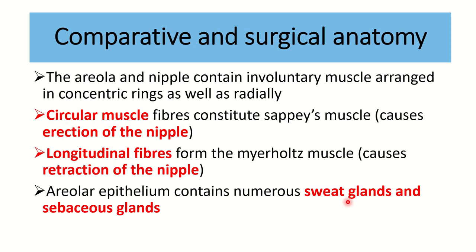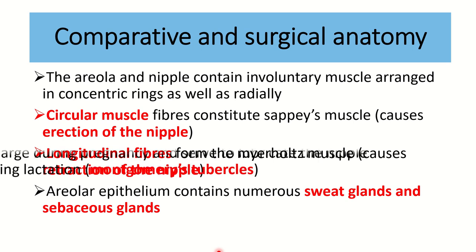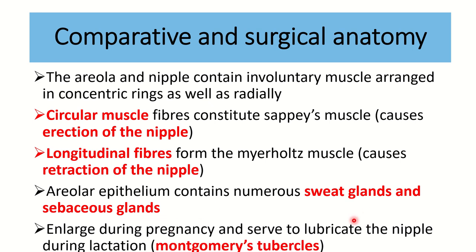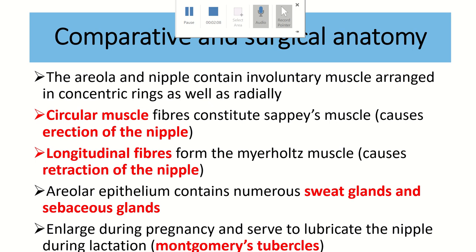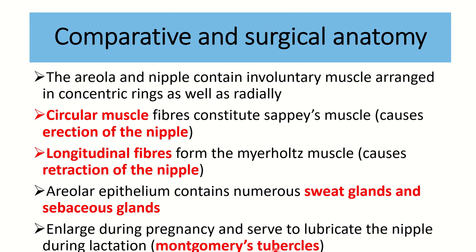The areolar epithelium contains numerous sweat glands and sebaceous glands, and their secretion prevents reaction during the suckling reflex of the breast. These glands are enlarged during pregnancy and serve to lubricate the nipple during lactation. This enlargement of the sweat and sebaceous glands is known as Montgomery's tubercles.